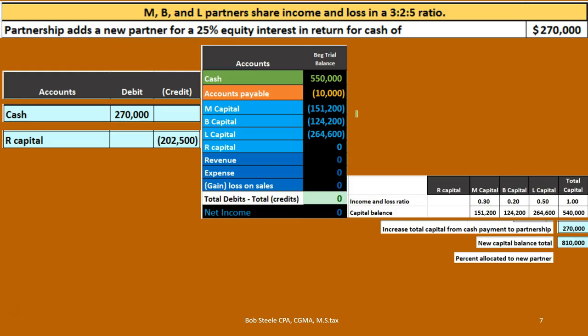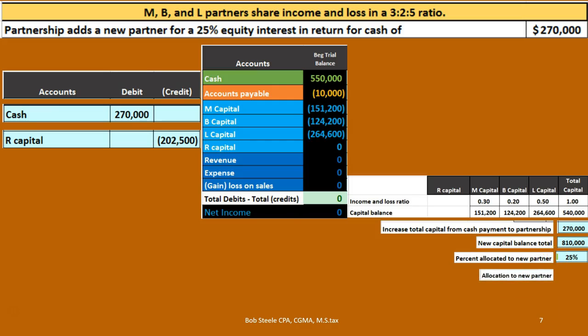We said the new partner was going to get a 25% interest. Therefore, $810,000 times 25% — that's the agreement — means the new partner is going to be on the books for $202,500. That's where this number is coming from.